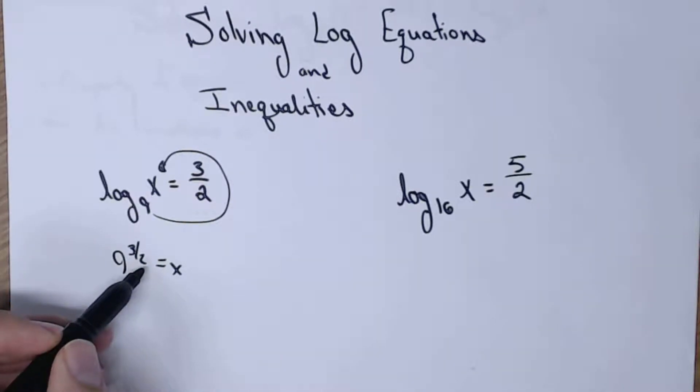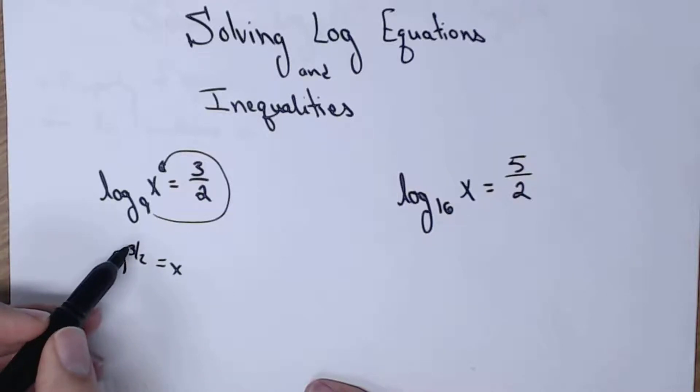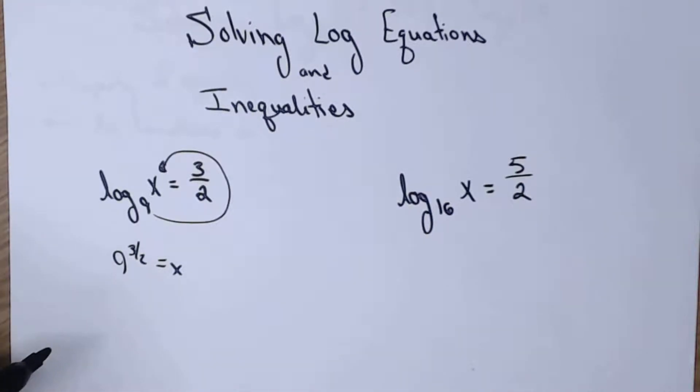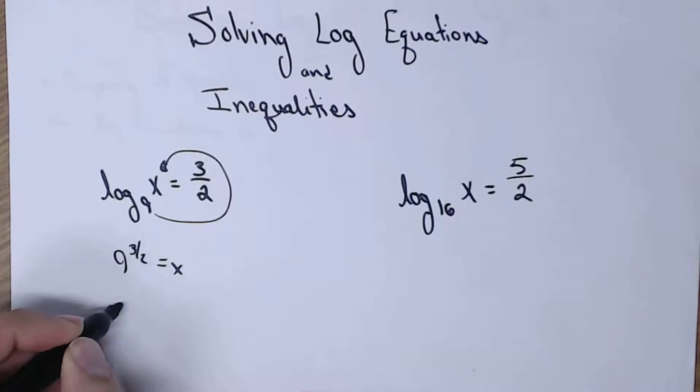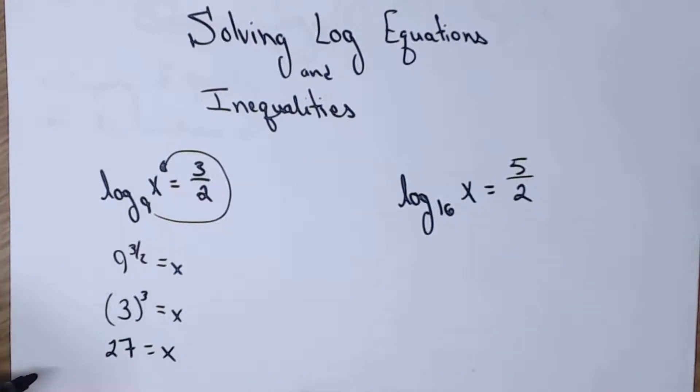Remember it's power over root. So I have 9 to the 3rd power and then the square root of it. But I can do that in whichever order I like, so I'm going to do the square root first. Square root of 9 to the 3rd power. So the square root of 9 is 3. I still have to raise it to the 3rd and 3 to the 3rd is 27. So x is 27.